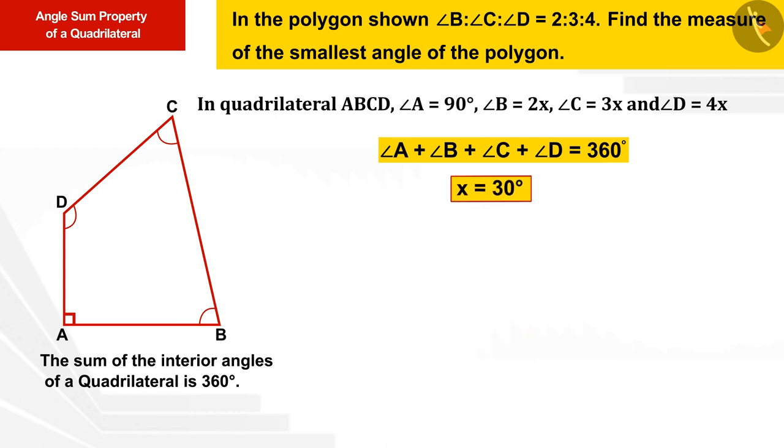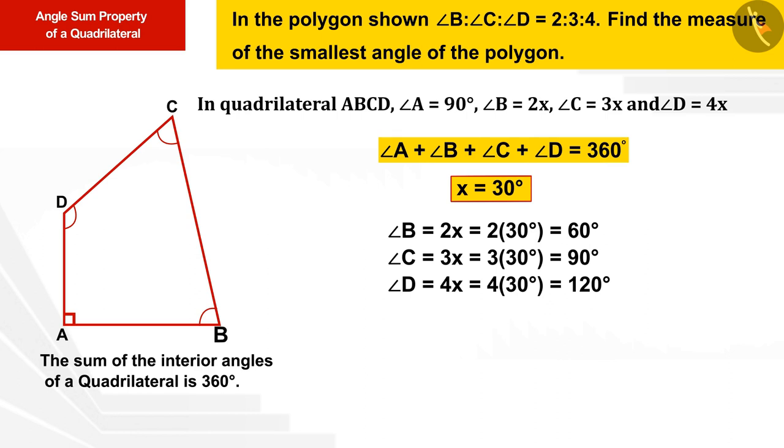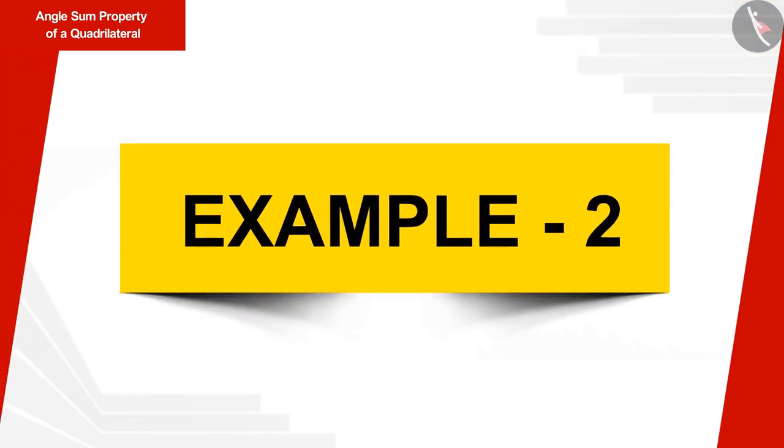Using which we can find measurements of all unknown angles in this way. As you can see, angle B is the smallest angle of the polygon which is 60 degrees. Let us see another example.